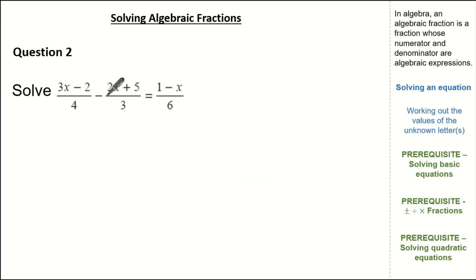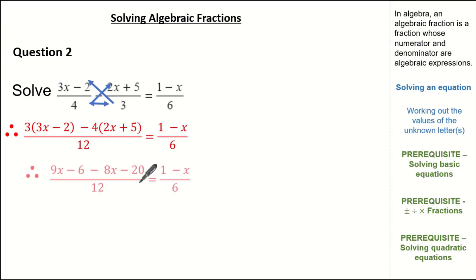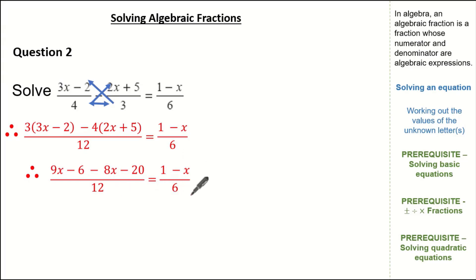Using our knowledge on subtraction of fractions, let's cross multiply. Cross multiplying means 3 multiplied by (3x minus 2), indicated here, minus 4 multiplied by (2x plus 5), indicated here, and 4 times 3 gives us 12. Notice how it still equals (1 minus x) over 6. Expanding: 3 times 3x is 9x; 3 times minus 2 is minus 6; minus 4 times 2x is minus 8x; minus 4 times 5 gives minus 20. We still have our denominator of 12 and it still equals (1 minus x) over 6.